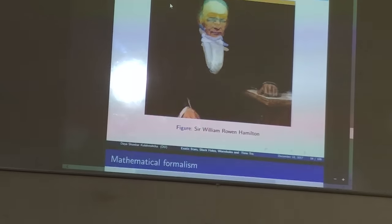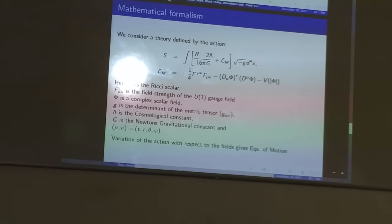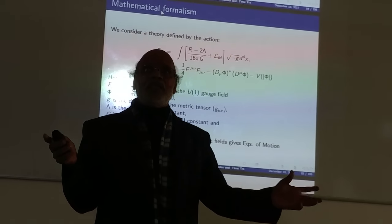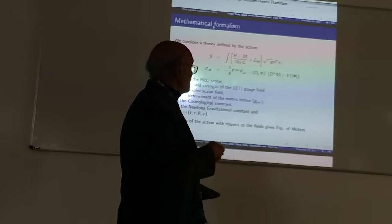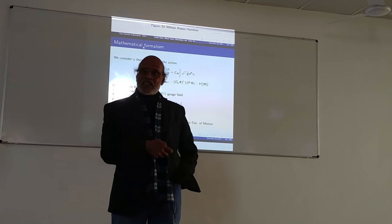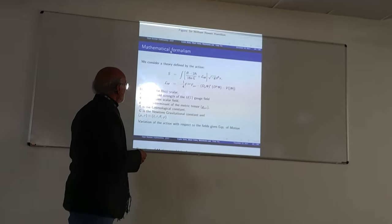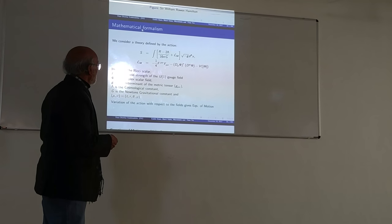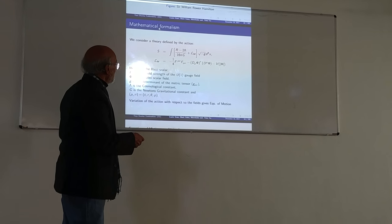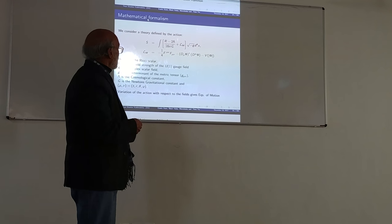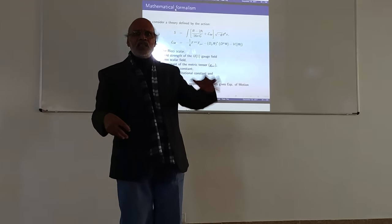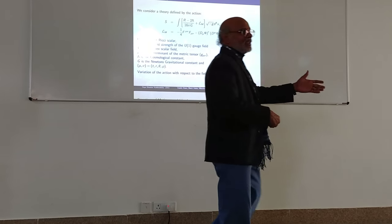We can use Hamilton's variational principle to write down the action. This is concrete work — not hypothetical; we are talking about real things. Using this, we have half a dozen leading research publications. Here: this is the Ricci scalar, this is the cosmological constant, this is the electromagnetic field, this is the complex scalar field, and this is the potential. The Lagrangian is kinetic energy minus potential energy — you need to know only that.